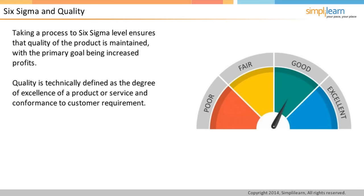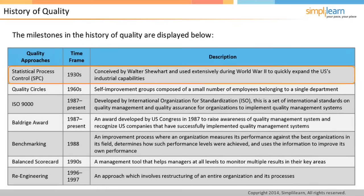In the mid-1930s, Statistical Process Control, or SPC, was developed by Walter Shewhart and used extensively during World War II to expand the U.S.'s industrial capabilities. SPC is the application of statistical techniques to control any process. In the 1960s, there were quality circles, which originated in Japan, started by Kaoru Ishikawa. Quality circles were self-improvement groups composed of a small number of employees from a single department, bringing improvements with little or no help from top management.